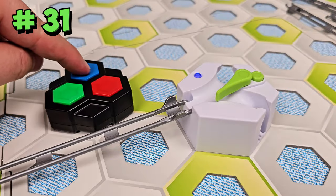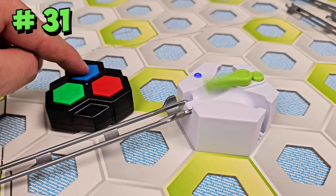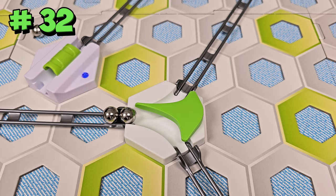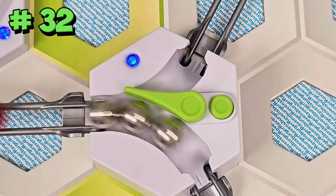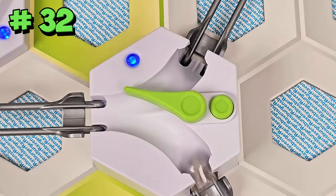If you happen to have the GraviTrax power remote, it can also be used to activate the power switch. Unlike the original GraviTrax switch, multiple marbles won't get stuck in the power switch. An entire line of marbles can go through without creating a log jam.